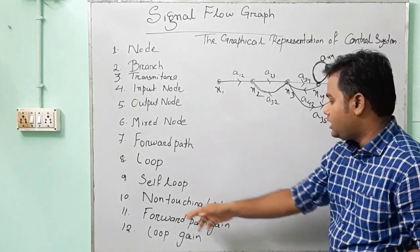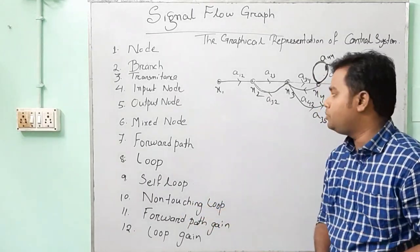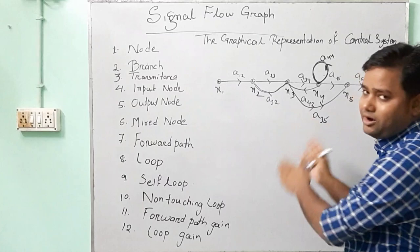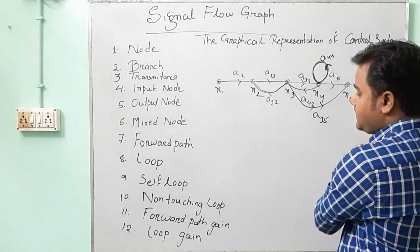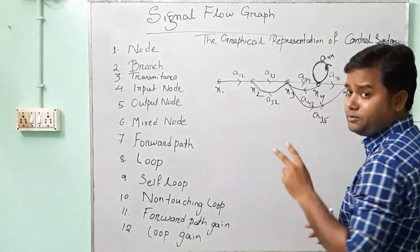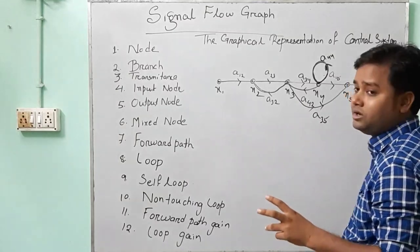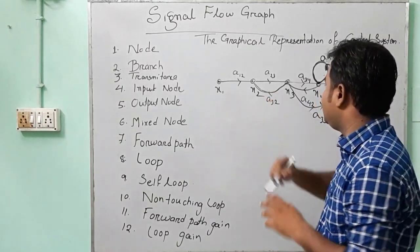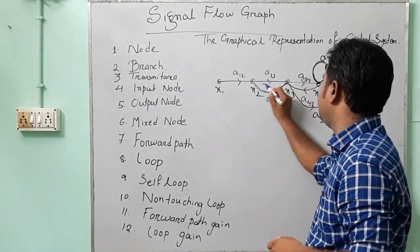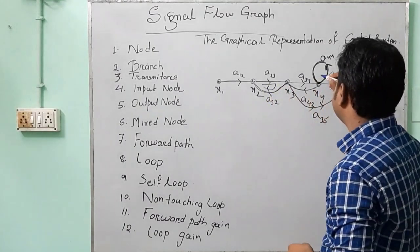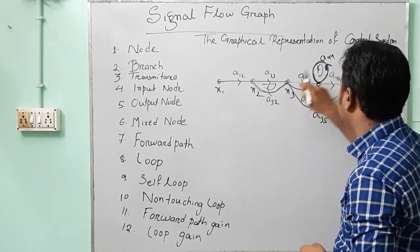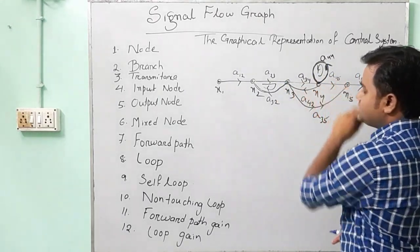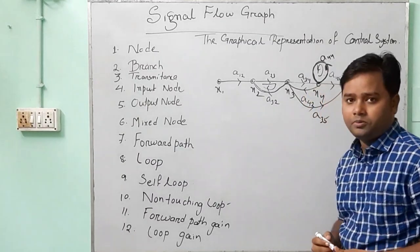Non-touching loop means that in the graph, if two loops have no common nodes, they are called non-touching loops. For example, if one loop and another loop share no common node, these two loops are non-touching loops.